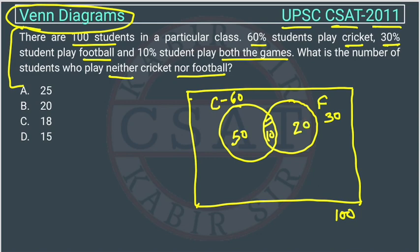The total number of students who are playing one or two games will be 50 plus 10 plus 20, which equals 80 students. So 80 students are playing either cricket or football or both.